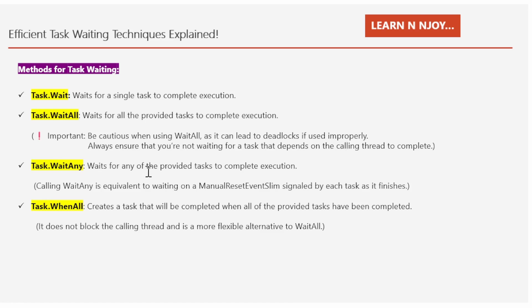Task.WaitAny waits for any of the provided tasks to complete execution. Calling WaitAny is equivalent to waiting on a ManualResetEventSlim signaled by each task as it finishes — there is a separate video on the ManualResetEventSlim class for more detail. Task.WhenAll creates a task that will complete when all of the provided tasks have completed. It doesn't block the calling thread and is a more flexible alternative to WaitAll.